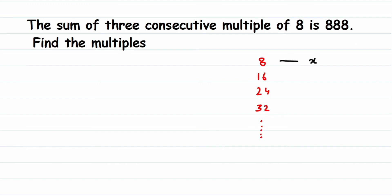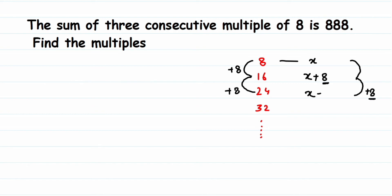From 8, how did we get 16? By adding 8. So to x, we add 8 to get the second multiple: x plus 8. To get the third multiple, we add another 8 — so x plus 8 plus 8, which is x plus 16. So the three consecutive multiples of 8 are x, x plus 8, and x plus 16.